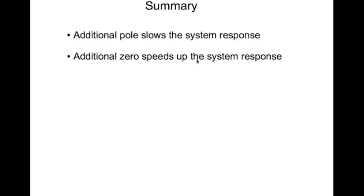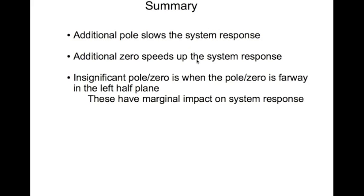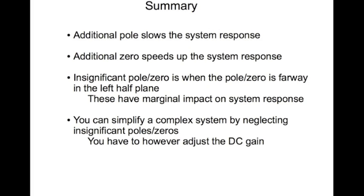In summary: additional poles slow down the system response; additional zeros speed up the system response. A pole or zero is insignificant when it is far away in the left half plane, having only marginal impact on system response. You can simplify a complex system by neglecting insignificant poles and zeros, but you must adjust the DC gain accordingly.